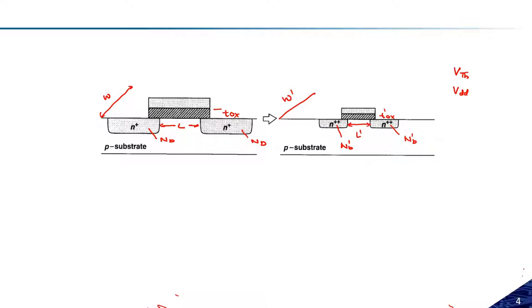A student asks: in constant voltage scaling, do we keep only threshold voltage and Vdd constant, or all voltages? The answer is all voltages — in normal operation, the body terminal of PMOS transistors is connected to the maximum potential (Vdd), and the body terminal of NMOS transistors is connected to ground. So body voltage, gate voltage, drain voltage, and source voltage all scale down with factor alpha when Vdd changes.